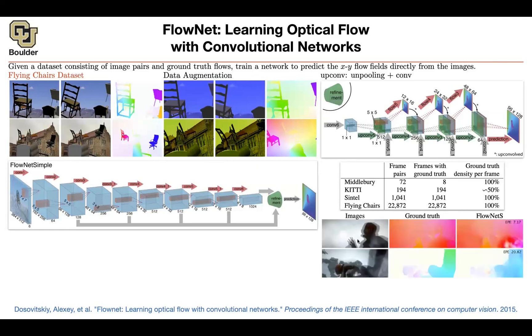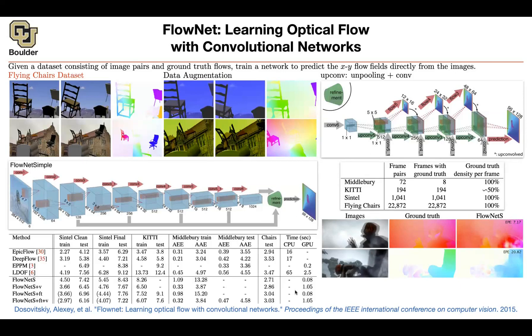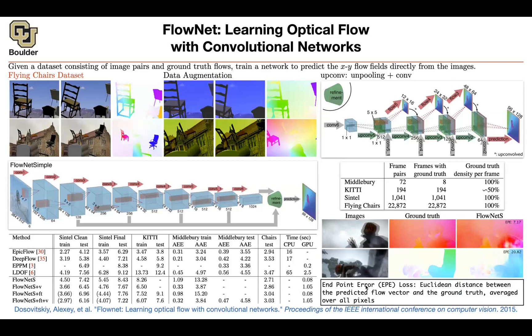An image goes in, and you compare the ground truth to what's coming out of FlowNet. In terms of the metric, you use endpoint error loss, which is just the Euclidean distance between the predicted flow vector and the ground truth flow vector, averaged over all pixels. It's nothing too fancy, and you get really good results.